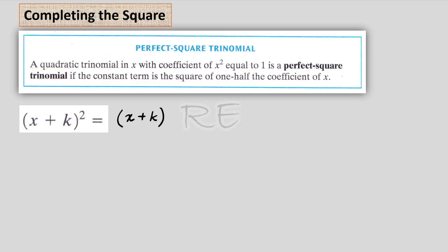x plus k squared is x plus k times x plus k. Notice that when we multiply them together, we get x times x — x squared — as the first term. The last term is k times k, which is k squared. The middle term will be kx plus kx, which is 2kx.